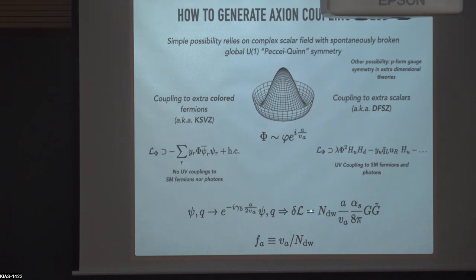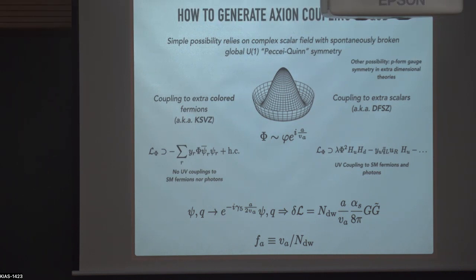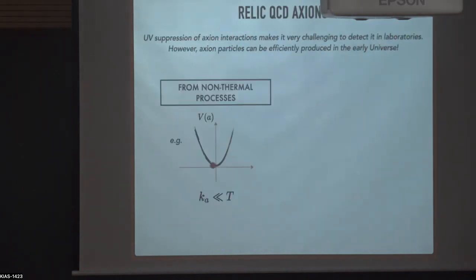There is a parameter N_DW that relates the VEV of the complex scalar phi to the axion decay constant f_A as f_A = v / N_DW. This means the axion can have a periodicity larger than the QCD periodicity 2 pi f_A; the full axion periodicity is 2 pi v.